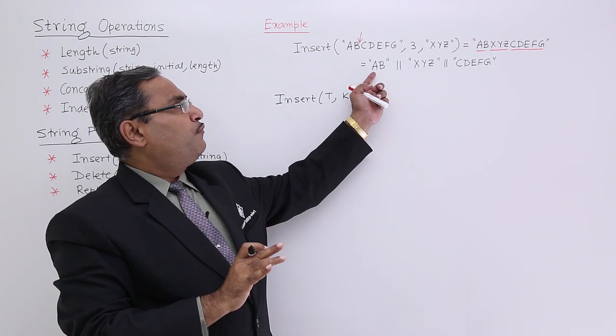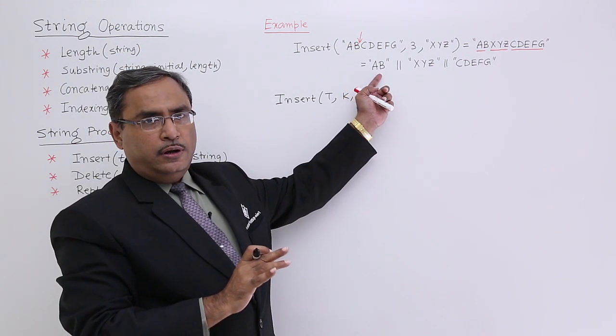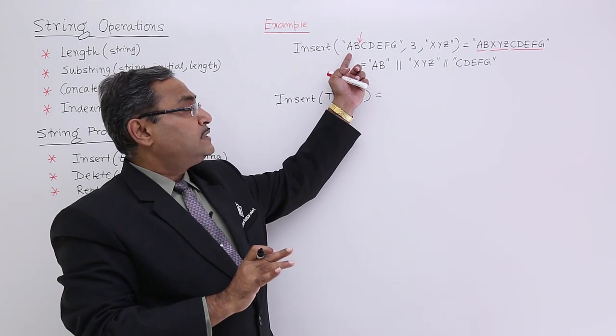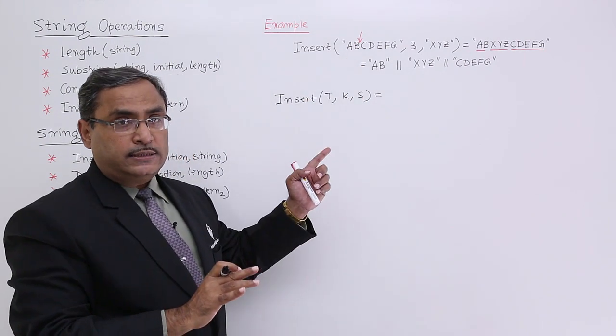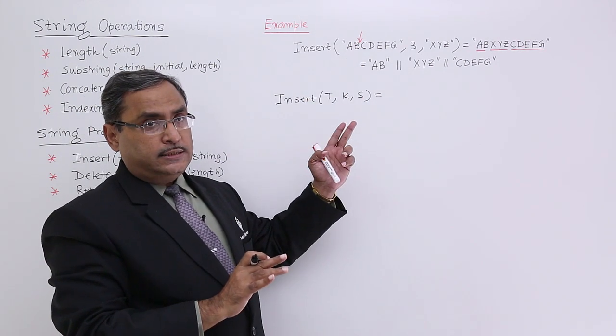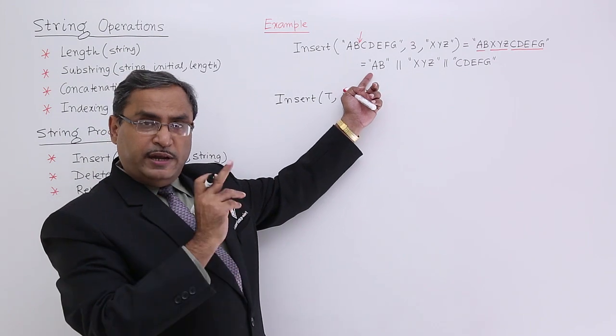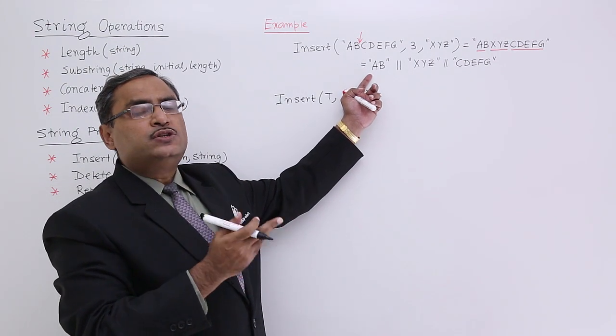At first, I should go for the substring retrieval of AB from this. How many characters? Two characters from which place? From the very first place. 2 means what?